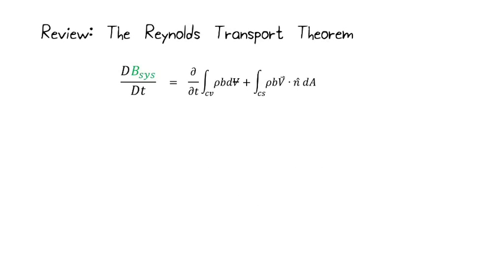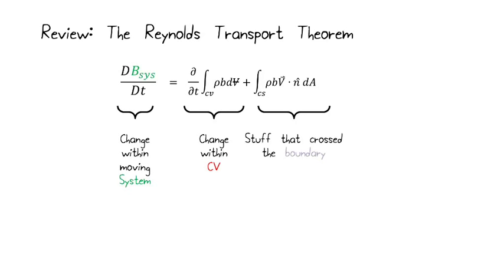So we want to just review our Reynolds transport theorem. We're used to seeing this by now. We have a change within the moving system fixed packet of mass. That's the Lagrangian perspective. We have the change within our control volume, where we have a region in space we're interested in. That's the Eulerian perspective.